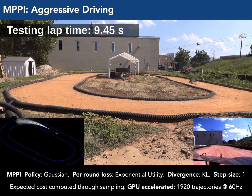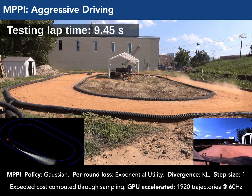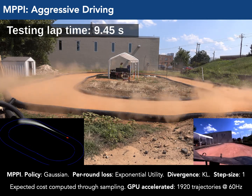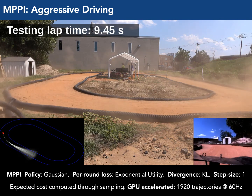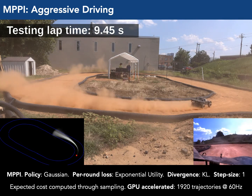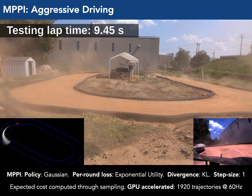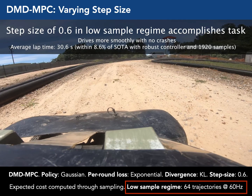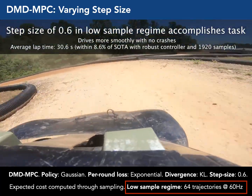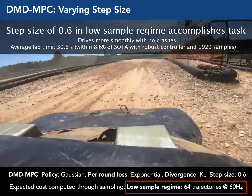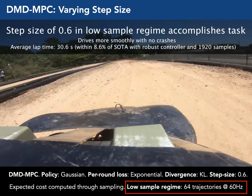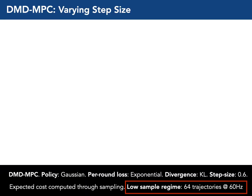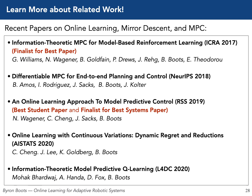Model predictive path integral control, an instance of our approach, computes expected cost at each state through sampling — a GPU-accelerated method that generates almost 2,000 trajectories at about 60 hertz, using this to evaluate the cost and generate a gradient that dynamic mirror descent can use to update the policy at each iteration. Using insights from DMD-MPC, we're able to generate new algorithms that reduce the number of samples needed by almost two orders of magnitude, allowing us to use much less compute and scale MPC up to higher-dimensional problems.